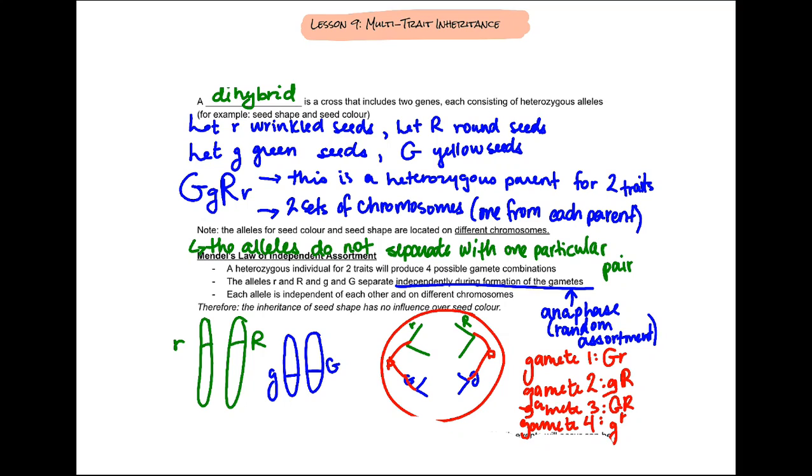So we're going to let R represent wrinkled seeds, lowercase r, and then capital R will represent round seeds. And then because we're dealing with two genes we have to look at that second grouping of alleles, we're going to let lowercase g represent green seeds and uppercase G represent yellow seeds.